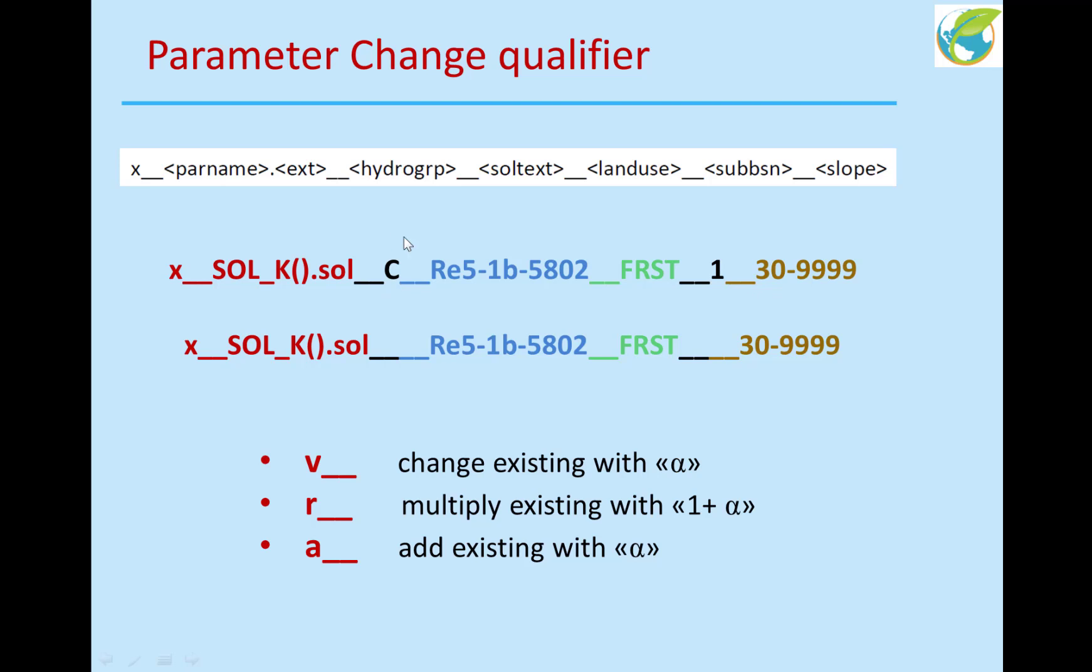Now, if I don't want to use hydrologic group, then I can just take that away. But the two underlines have to be here, right? These are all two underlines. And then, if I don't want to have the sub-basin number, I can take that out. But the two underlines of the sub-basin number has to be here, followed by the slope.